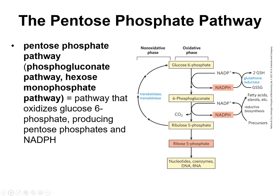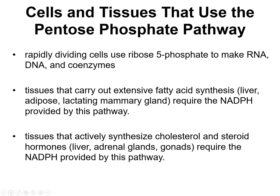The pentose phosphate pathway has a couple of other names, but we're going to stick with the pentose phosphate pathway. This pathway takes glucose 6-phosphate and produces pentose phosphates and NADPH. The whole cycle is shown on the right, and we're going to go through all the steps, talk about the enzymes — the same deal that we've done for the other metabolic processes so far. The cells that are going to use this pathway primarily are ones that are rapidly dividing, or ones that have a need for NADPH.